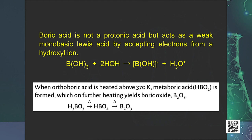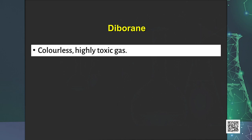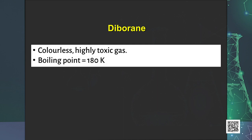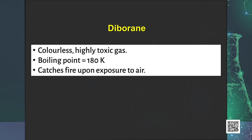Another important compound of boron that we need to study is diborane. The simplest boron hydride known is diborane. Diborane is a colorless, highly toxic gas with a boiling point of 180 K. It catches fire spontaneously upon exposure to air.